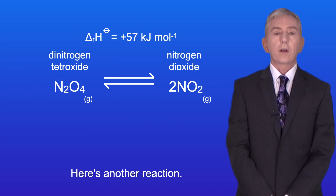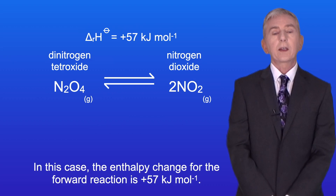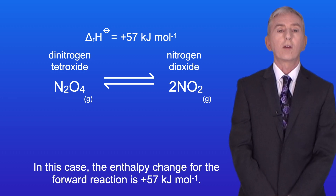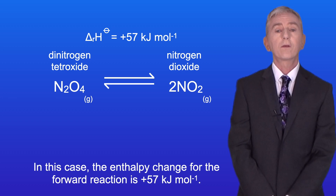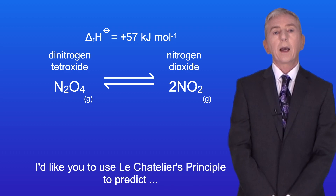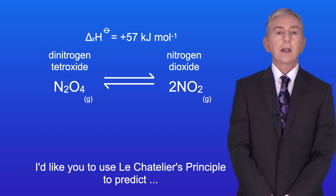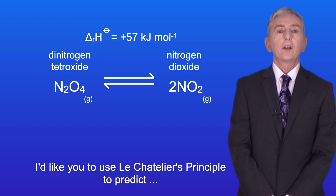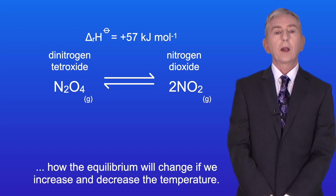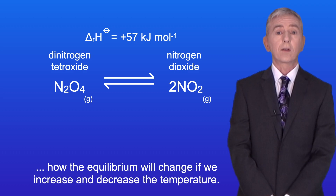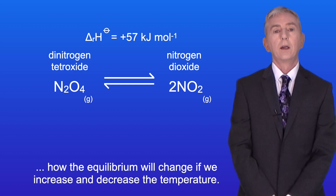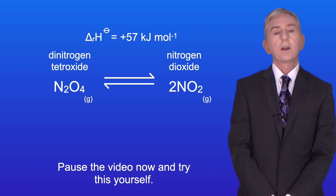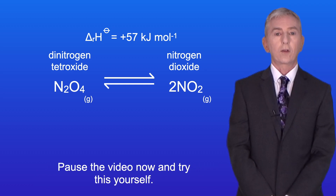Here's another reaction. In this case the enthalpy change for the forward reaction is plus 57 kilojoules per mole. I'd like you to use Le Chatelier's principle to predict how the equilibrium will change if we increase and decrease the temperature. So pause the video now and try this yourself.